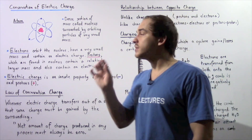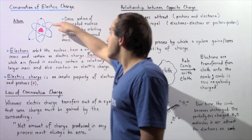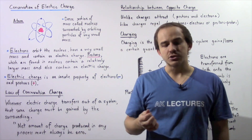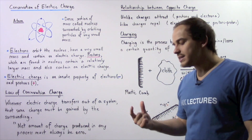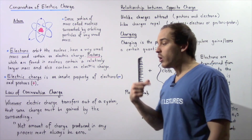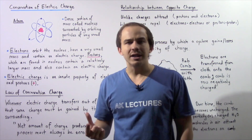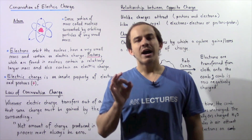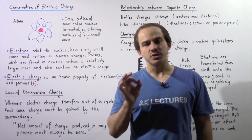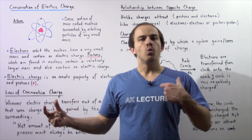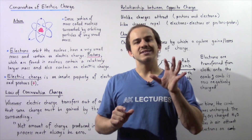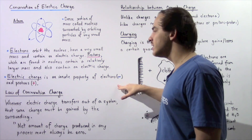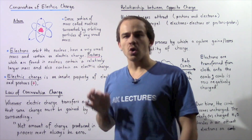Electrons, which are the subatomic particles that orbit our nucleus, also carry an electric charge. The quantity of electric charge carried by one proton is equal to the quantity of electric charge carried by one electron. However, from experimental results, we know that a proton will attract an electron. That's exactly why we arbitrarily assign a negative sign to an electron and a positive sign to a proton.